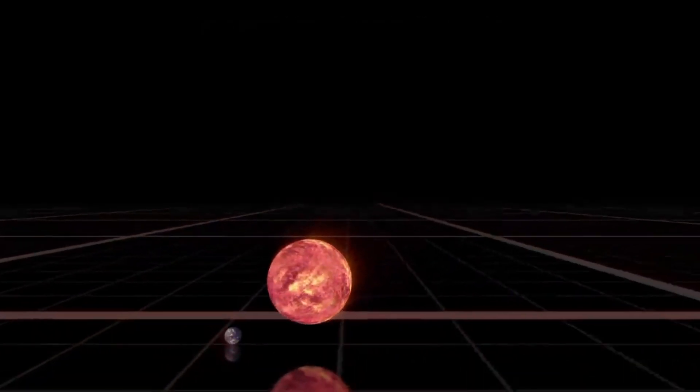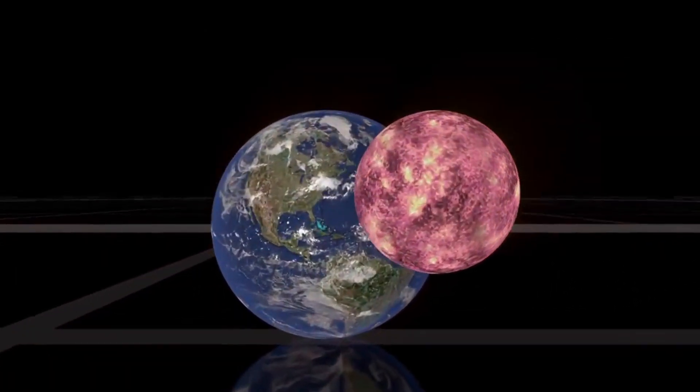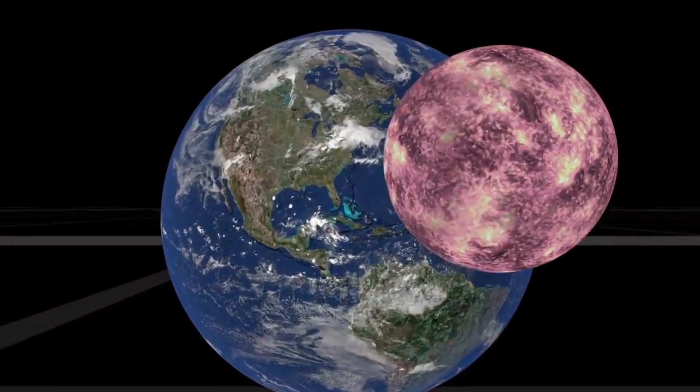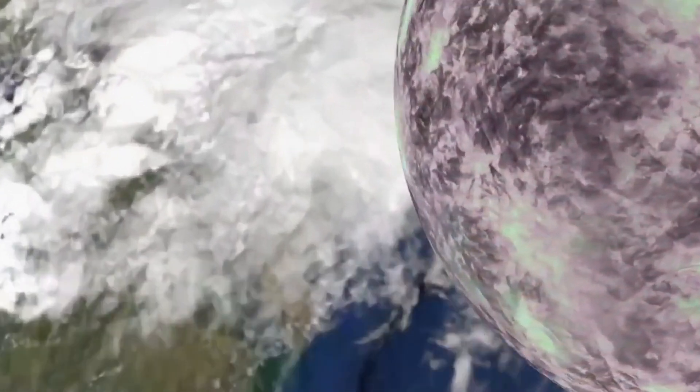Now we have two pieces of information about black holes: 1. Light can't escape from it. 2. A black hole is a locale where time and space are distorted. Any object can turn into a black hole — you just need to compress it until it reaches the Schwarzschild radius.